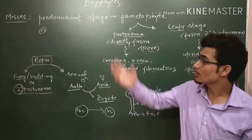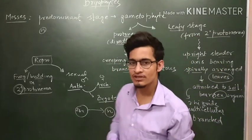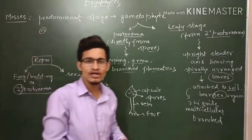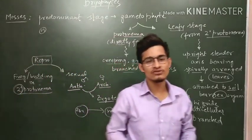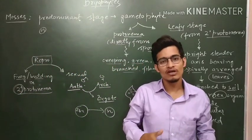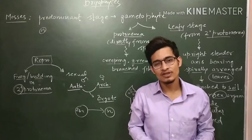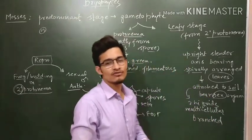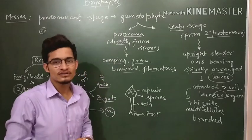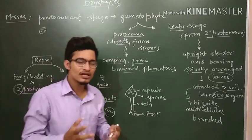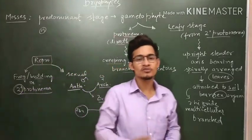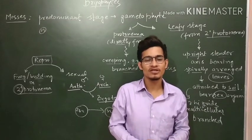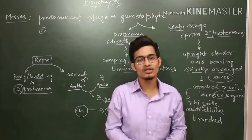This is all about mosses. I hope you got the lecture very well. Bryophytes is now completed. From the next lecture we are going to talk about pteridophytes, then gymnosperms, and then angiosperms. We have already talked about alternation of generation, but if time permits we will make a new video on that for revision. If you really liked this video, give it a thumbs up, subscribe to my channel, share this video with your friends, and tell them to subscribe too. Thank you so much and stay tuned.